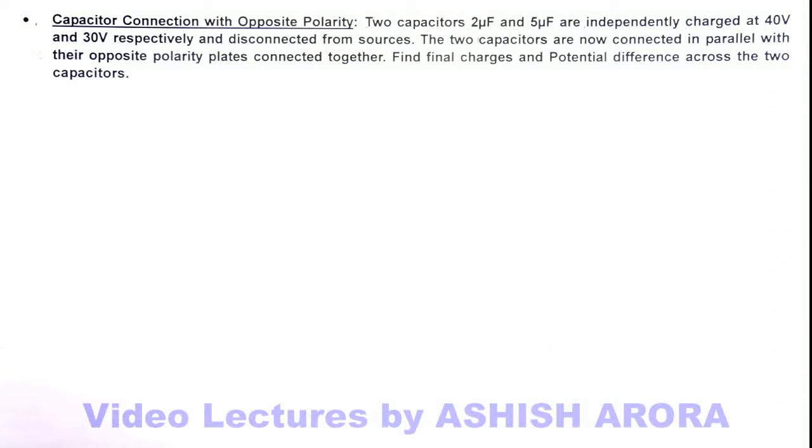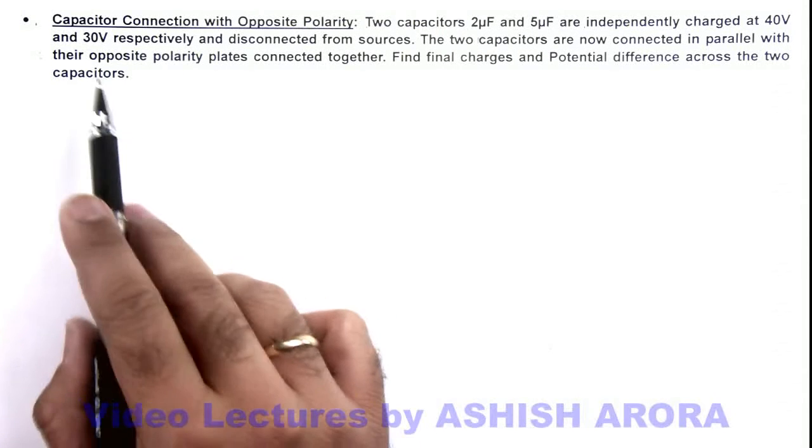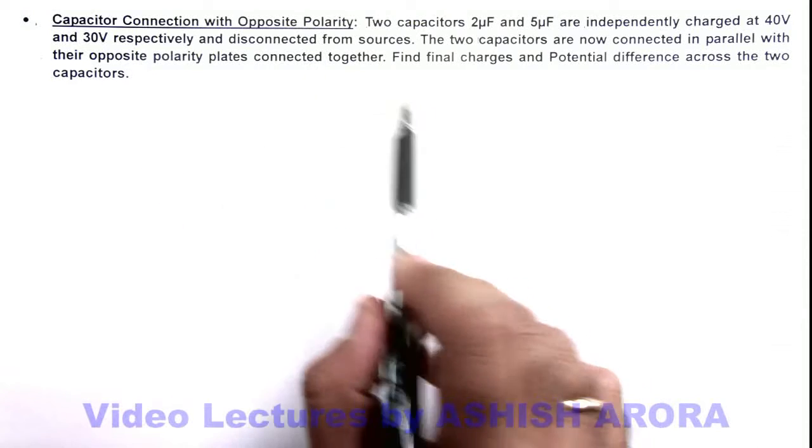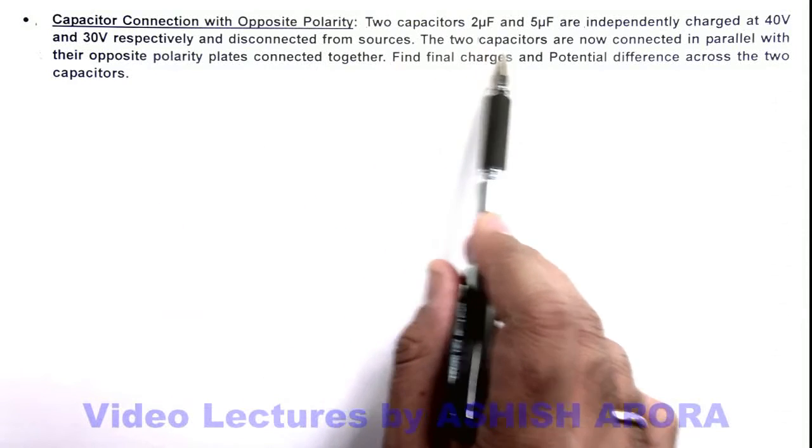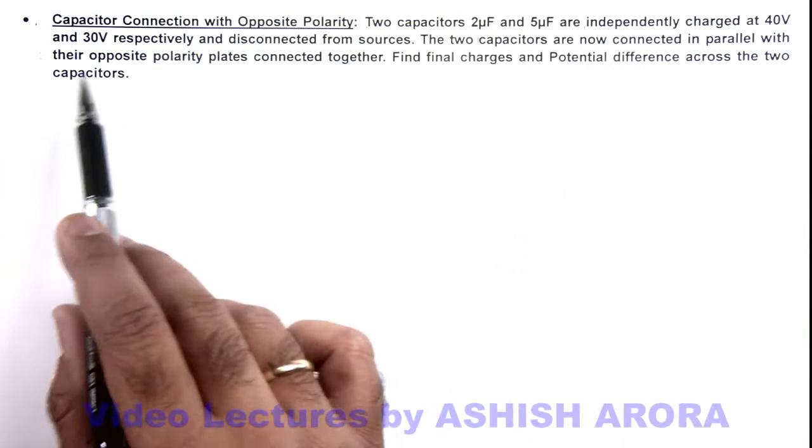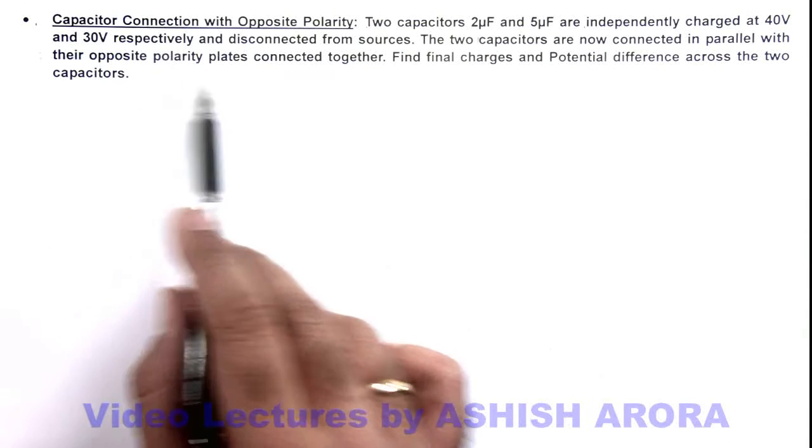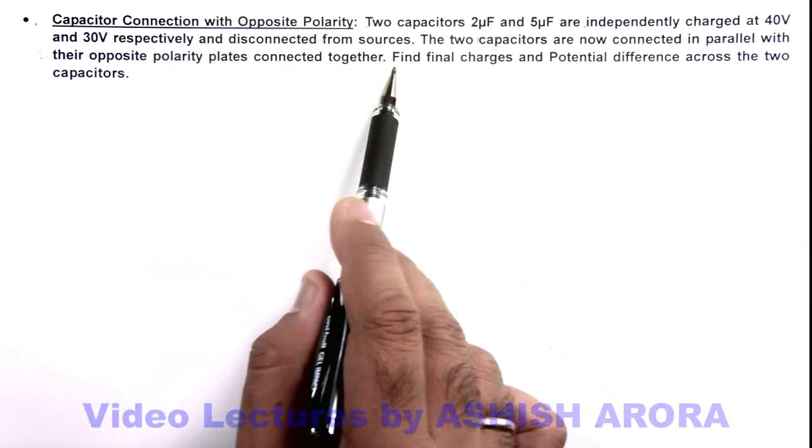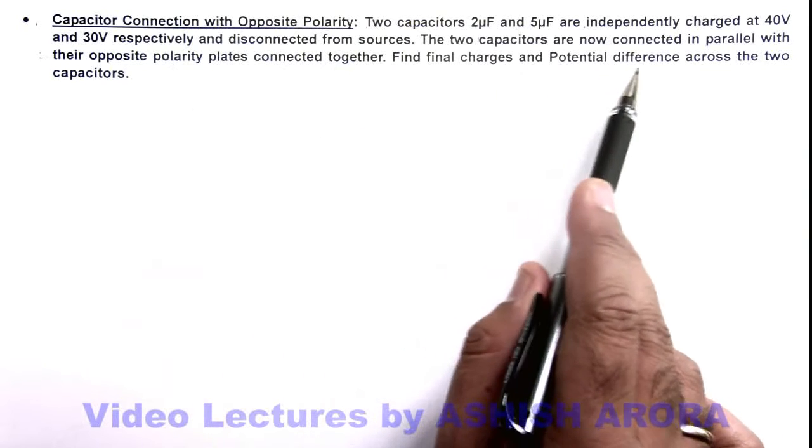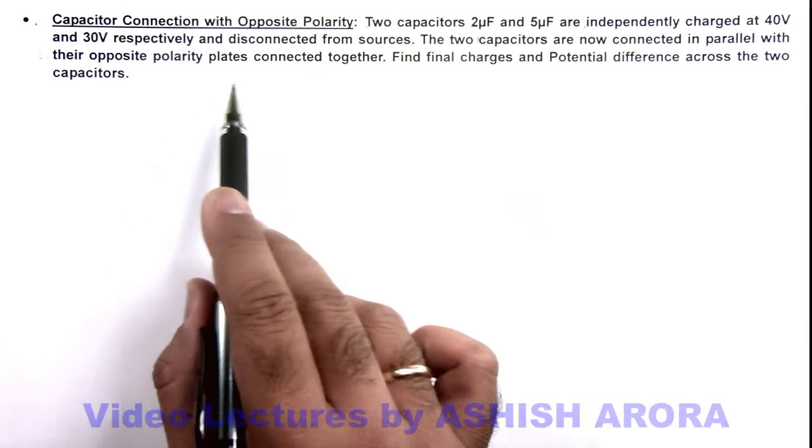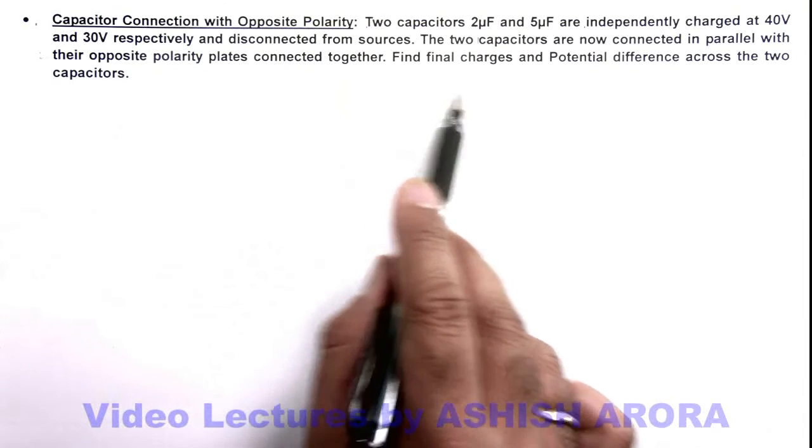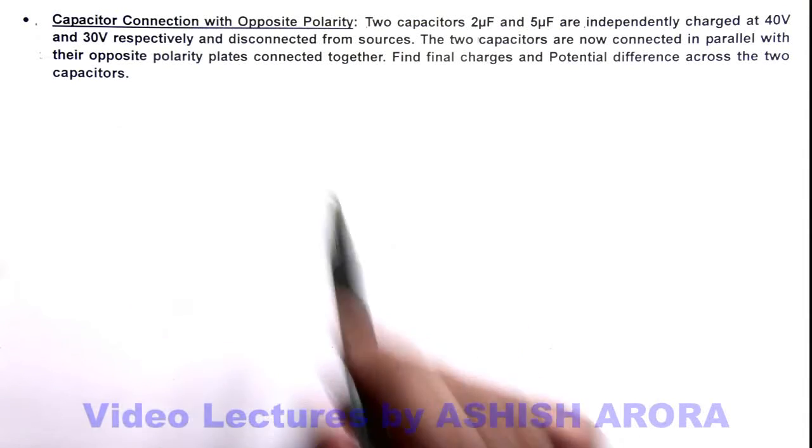In this illustration, we'll study capacitor connections with opposite polarity. We are given two capacitors, 2 microfarad and 5 microfarad, independently charged at 40 volts and 30 volts respectively and disconnected from sources. The two capacitors are now connected in parallel with their opposite polarity plates connected together. We are required to find final charges and potential difference across the two capacitors.